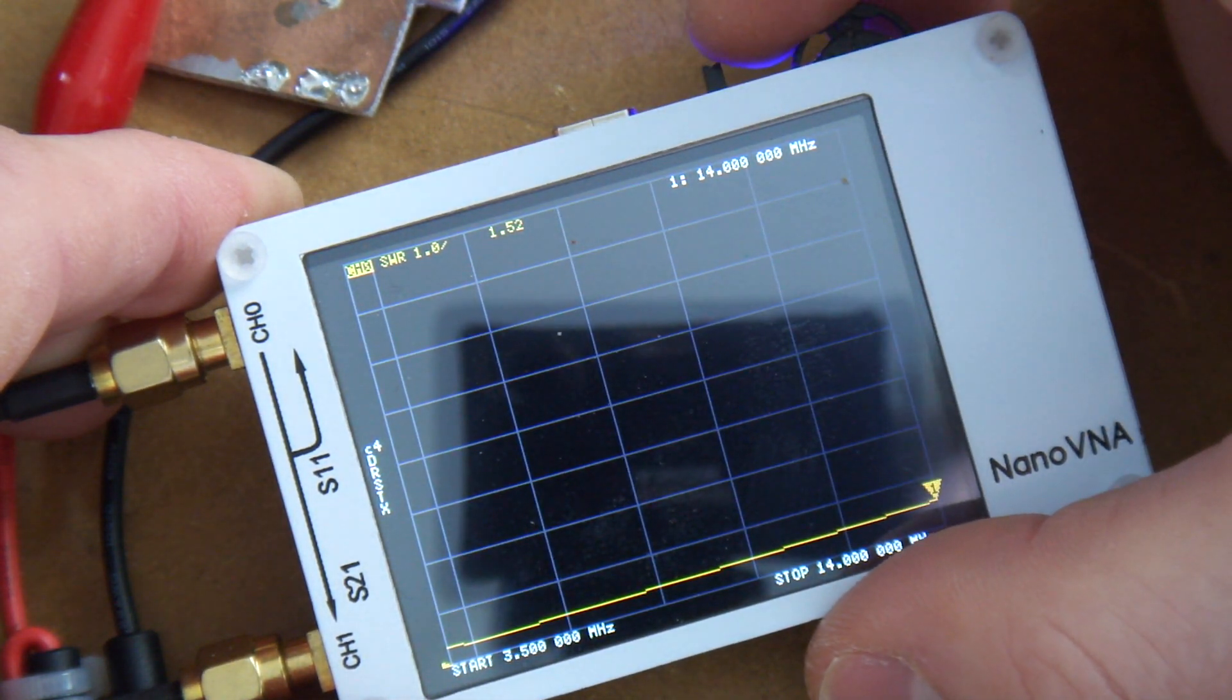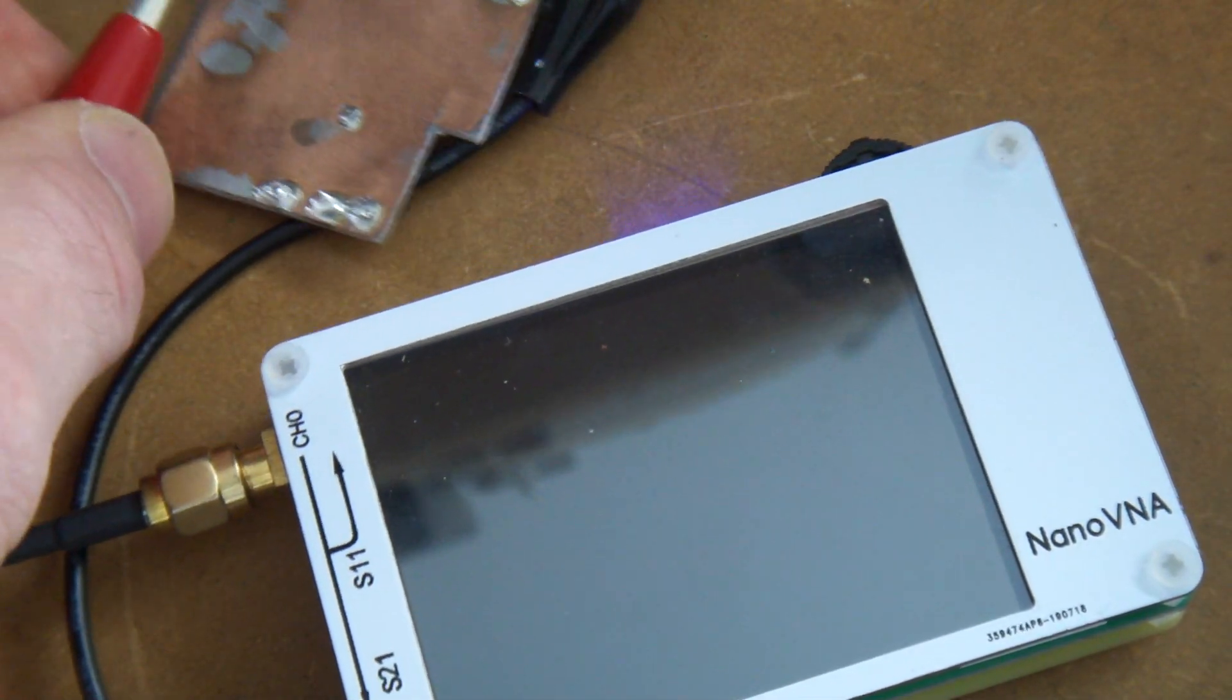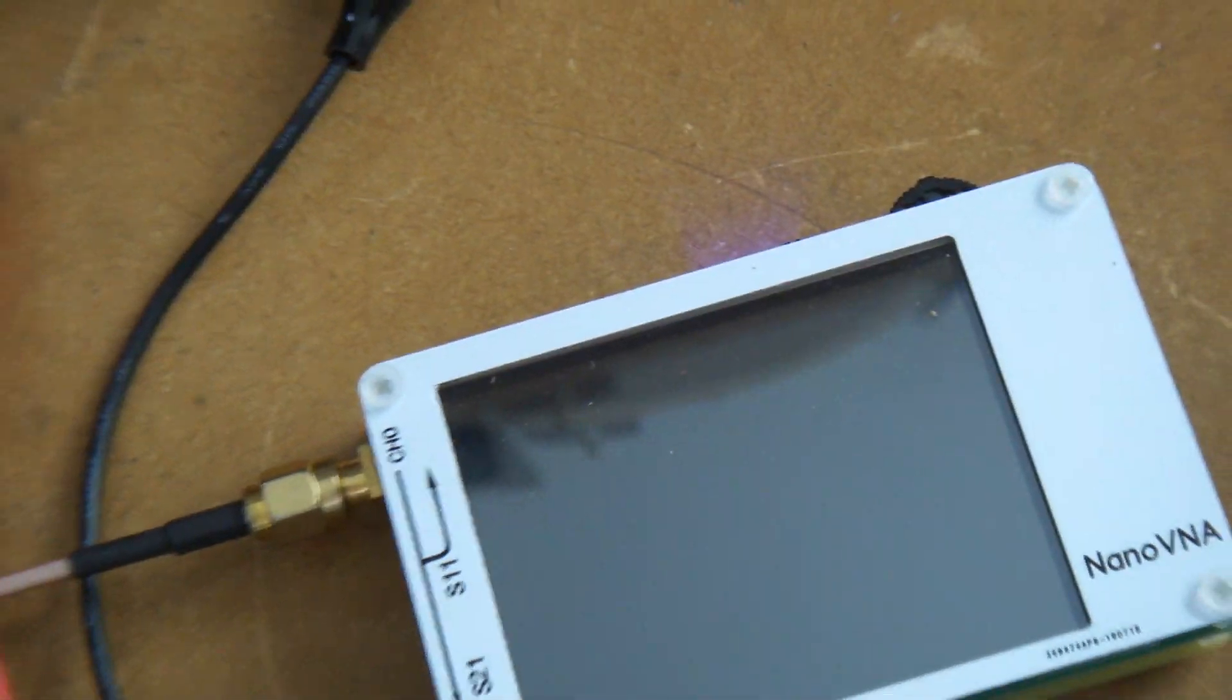I'm pretty confident that I'll be presenting pretty close to 50 ohms to that bandpass filter for the frequencies of interest for me, mainly 80m, 40m, and then 20m. So that's that one.